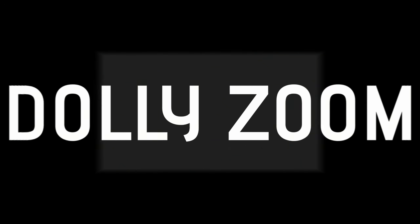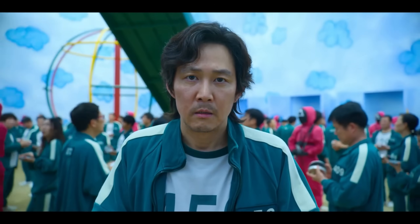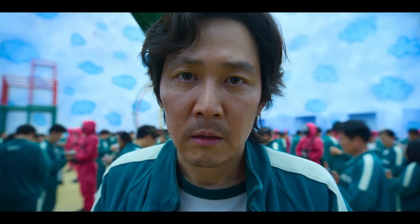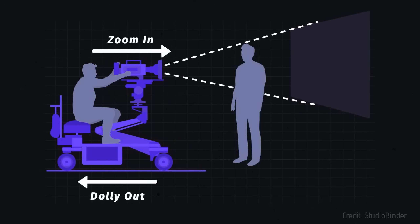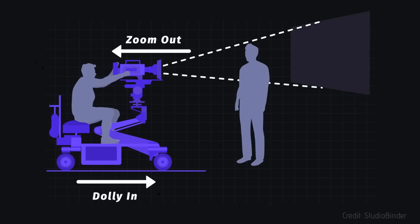Dolly Zoom. The Dolly Zoom is a well-known shot type used to represent a sense of vertigo or a feeling of unreality, and it's been around since it was first conceived by Alfred Hitchcock in the 1940s. Classically the camera pulls away from the target while the lens zooms in, or vice versa. This is what creates a continuous perspective distortion which we call the Dolly Zoom.